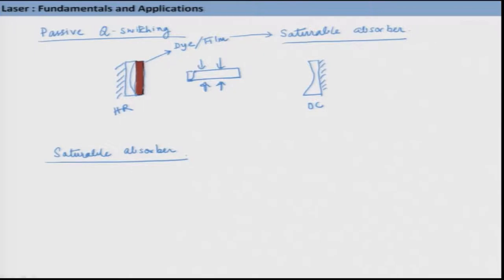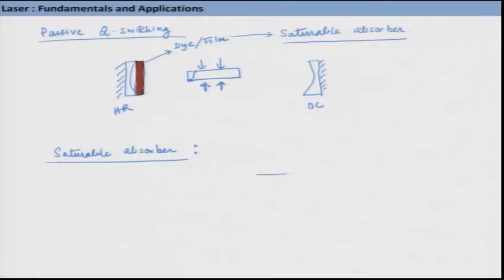You are all familiar with the term saturation. This is a kind of material where if you keep increasing the intensity of light falling on it, after some time it will saturate - that means it cannot absorb any further. You can imagine this like a two-state system with several molecules - this is a very strongly absorbing sample. One particular criteria for this material is that it must absorb the particular wavelength emitted by our active medium.